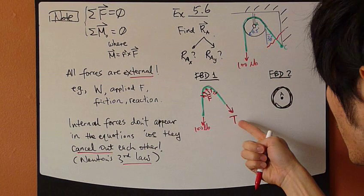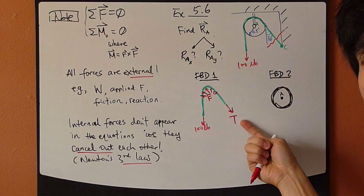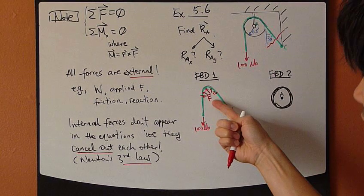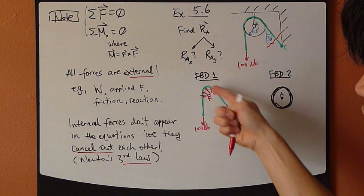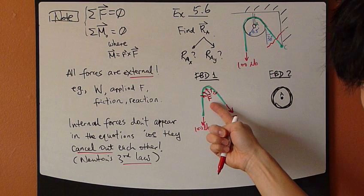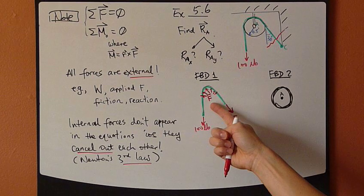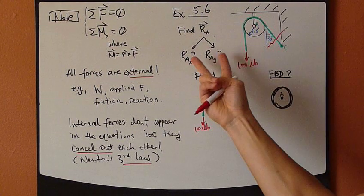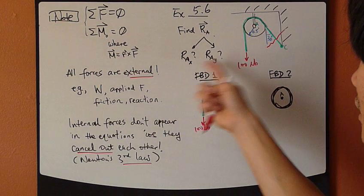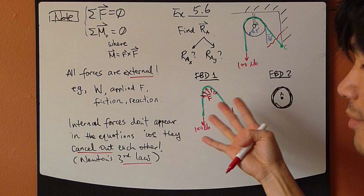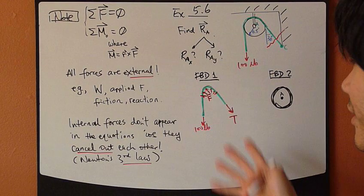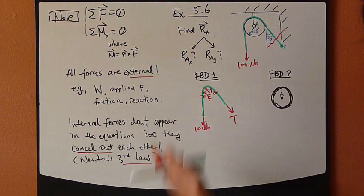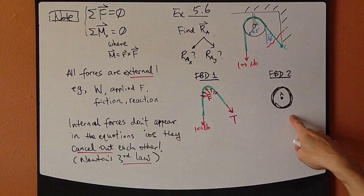That's my free body diagram one. Now obviously this is no good. First of all, we have this other unknown tension T, and we have this force, distributed force, which is also unknown. And third of all, RAX and RAY don't appear in this free body diagram at all. So this is useless. Maybe move on to free body diagram two. What about just the pulley?